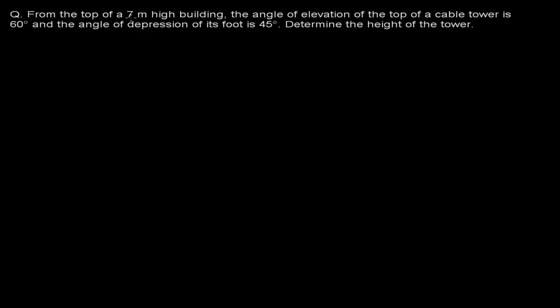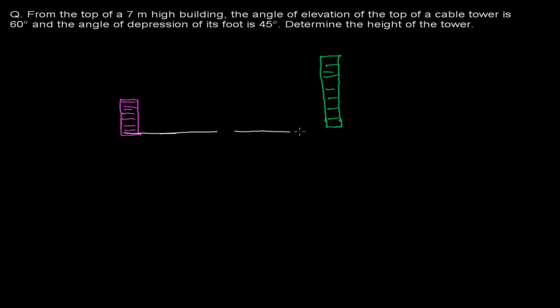From the top of the 7 meter high building — let me first draw that 7 meter high building. Suppose this is my 7 meter high building, and the angle of elevation of the top of the cable tower is 60 degrees. Now there is another cable tower, which is bigger than this, and whose top we are going to observe. So let me make another cable tower.